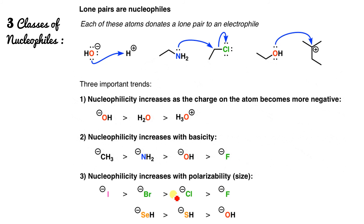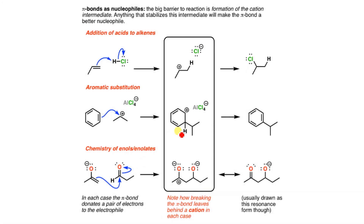Nucleophilicity increases with polarizability. Polarizability is the character of an ion related to charge distribution — we have covered this in Fajan's rules. As the size of an anion increases, nucleophilicity increases (in polar protic solvent). Pi bonds also act as nucleophiles — the big barrier is the formation of the cation intermediate. Once the cation intermediate is formed, the reaction proceeds easily.